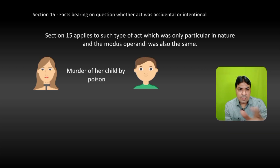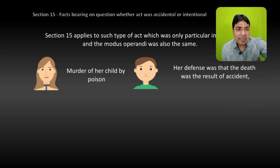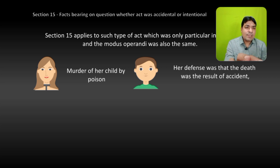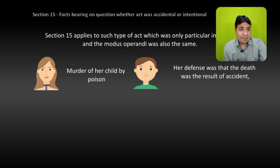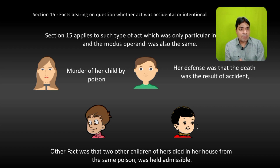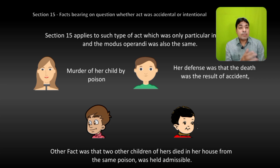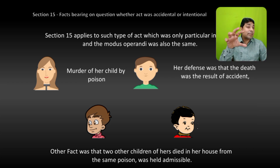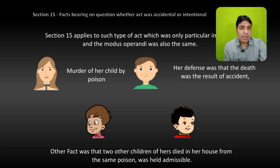Another example: a lady was charged with the murder of her child by poisoning. Her defense was that the death was the result of an accident — that the poison was not given intentionally. However, another fact was that two other children of hers had also died in her house from the same poison, and this was held admissible. Both facts become relevant to prove that the act was not accidental but that she intentionally poisoned her child.